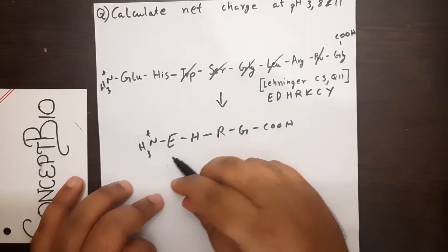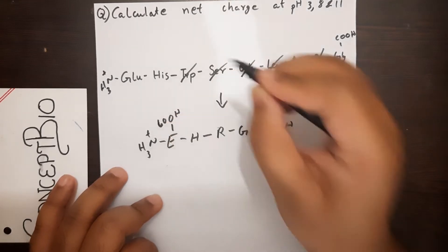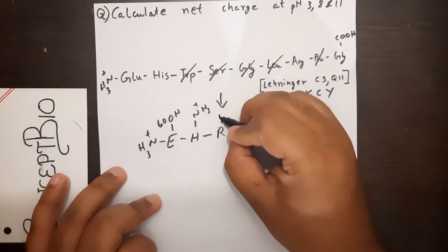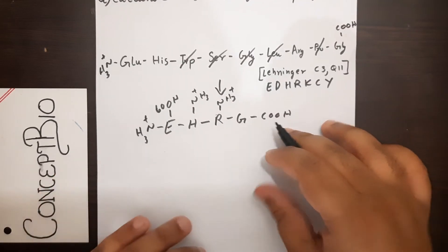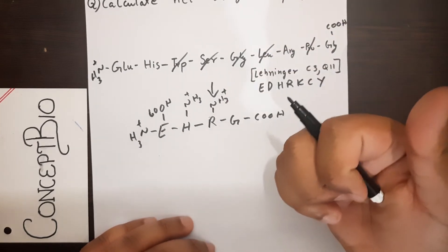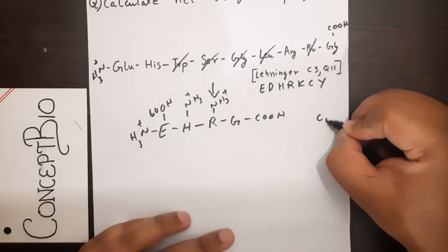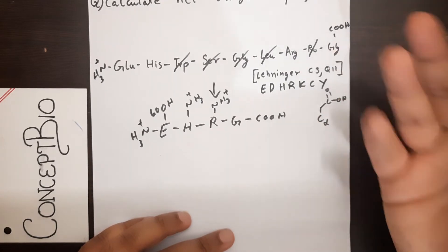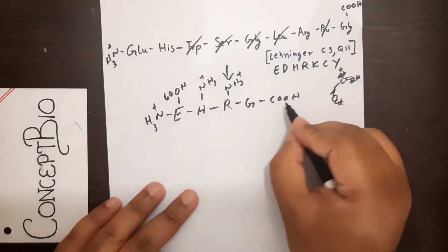Now we need to know what kind of R groups each contains. Glutamic acid has a carboxyl group (COOH) as its side chain. Histidine has a nitrogen group (NH3+). Arginine also has an NH3+ group. The carbon bonds in between, like the alpha carbon bonded to C=O-OH in glutamic acid, don't participate in protonation or deprotonation, so we just note the functional group present.